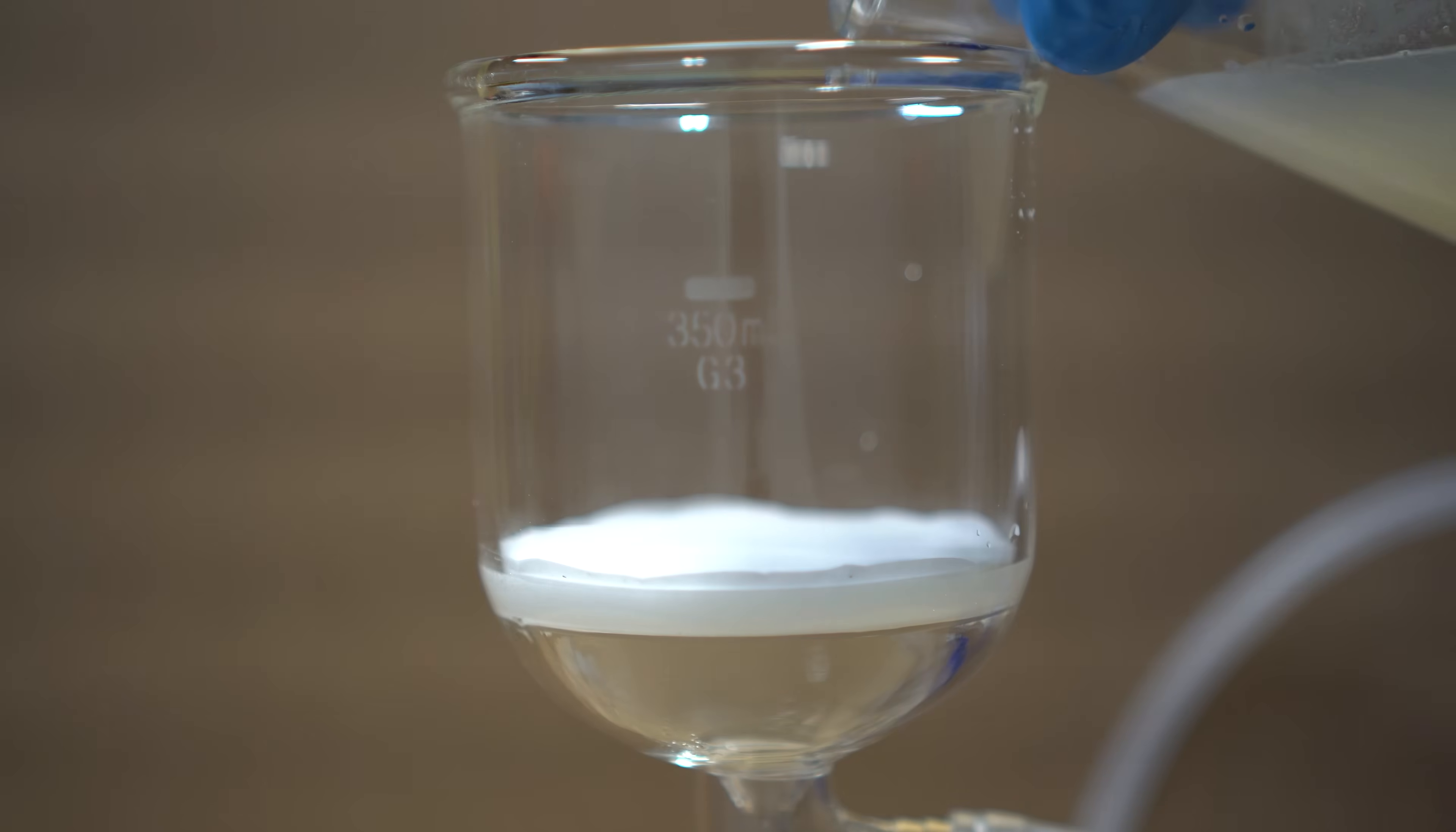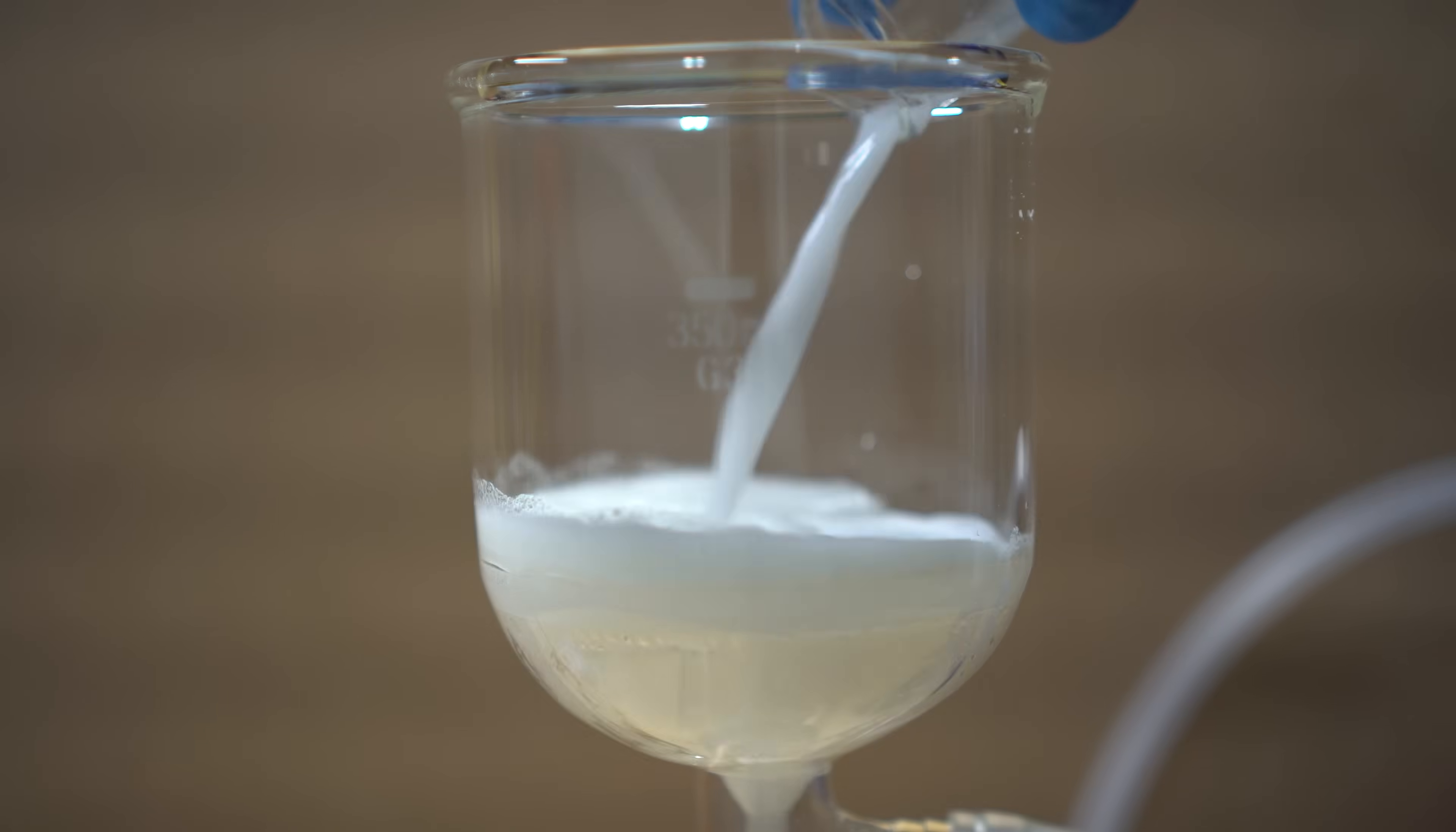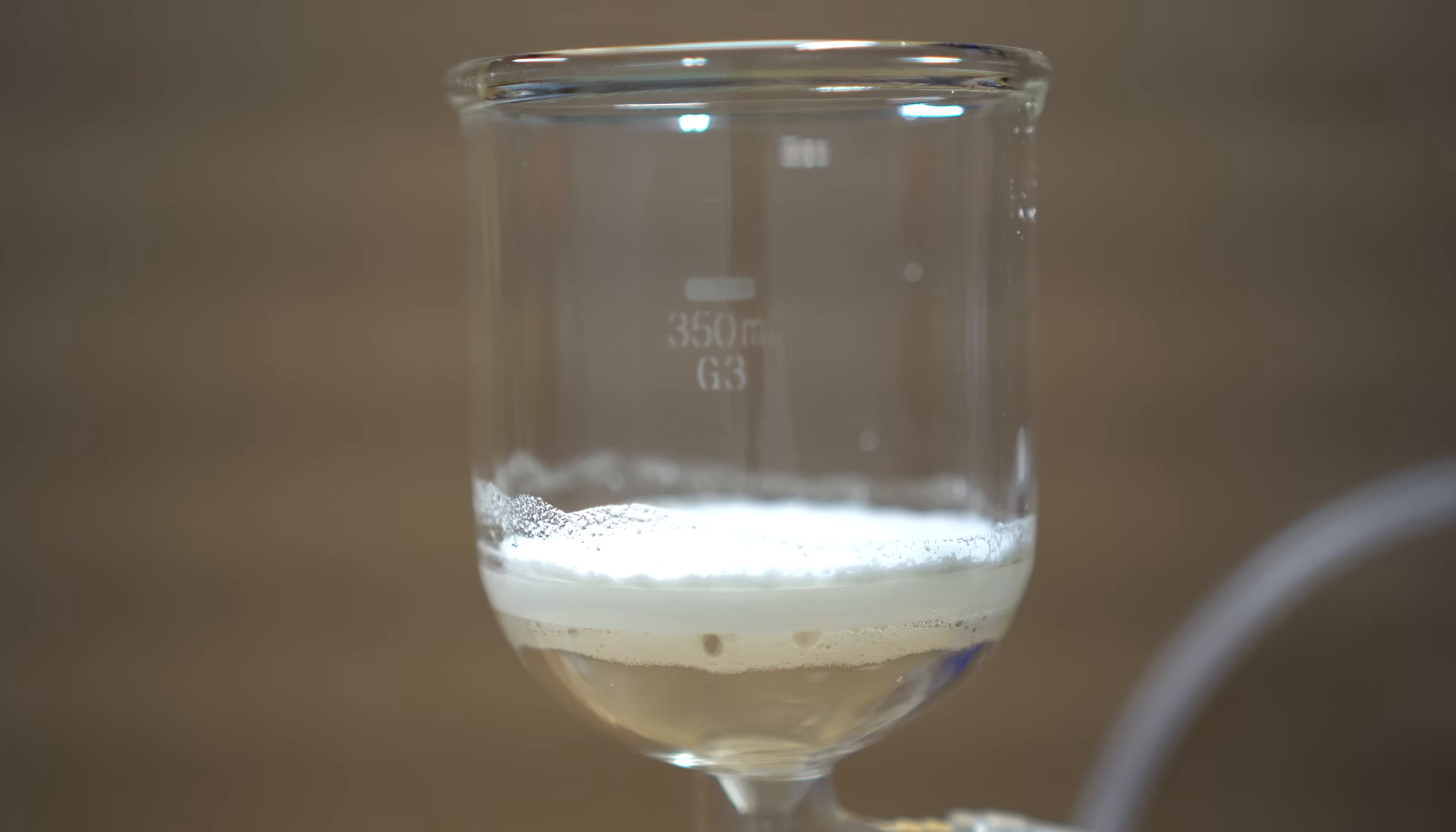I then vacuum filtered the precipitate and washed the flask four times with cold distilled water to really clean it up as much as possible. There was no certain amount used of the cold distilled water, I just used an arbitrary amount and made sure that the flask was fully cleaned.